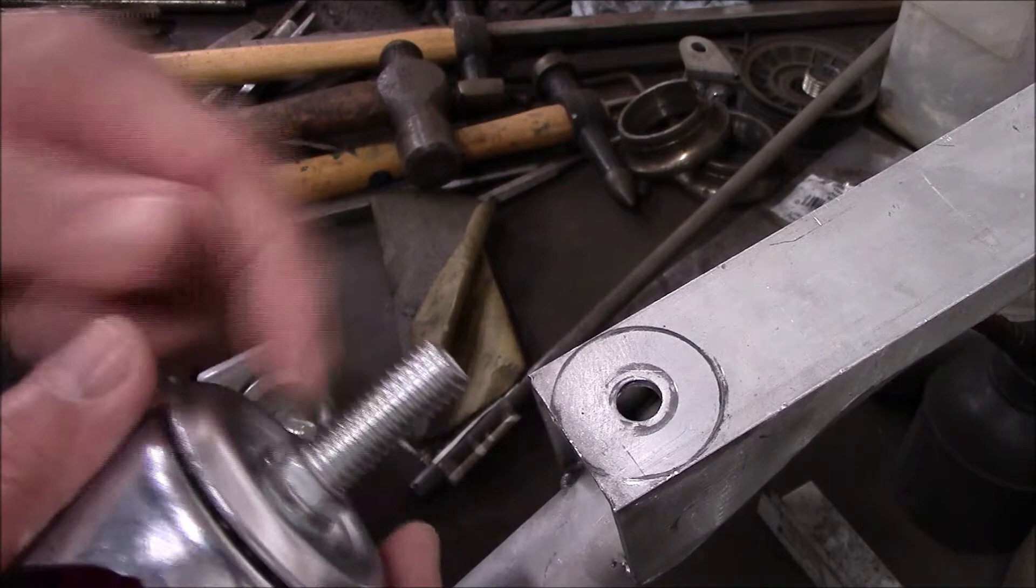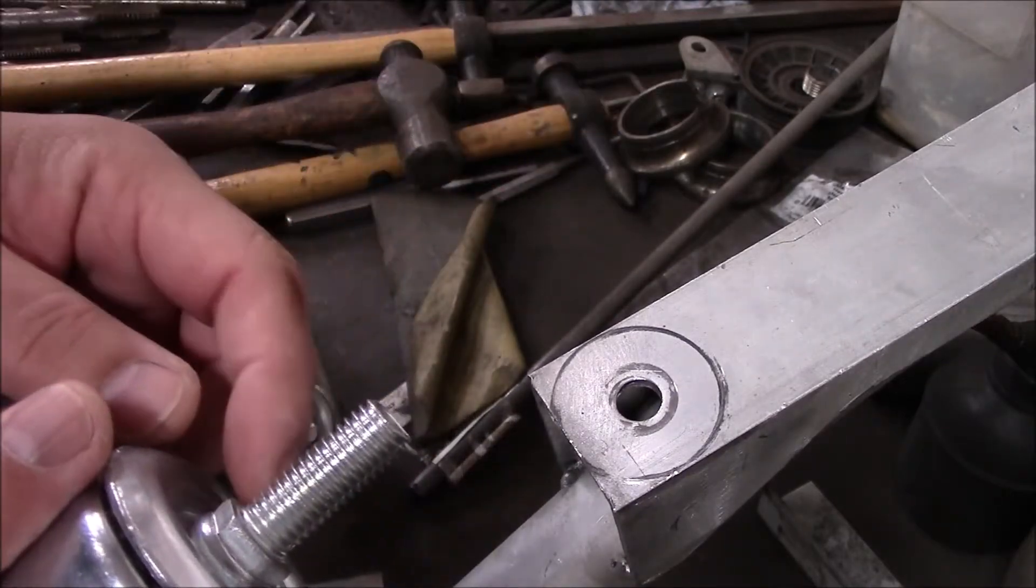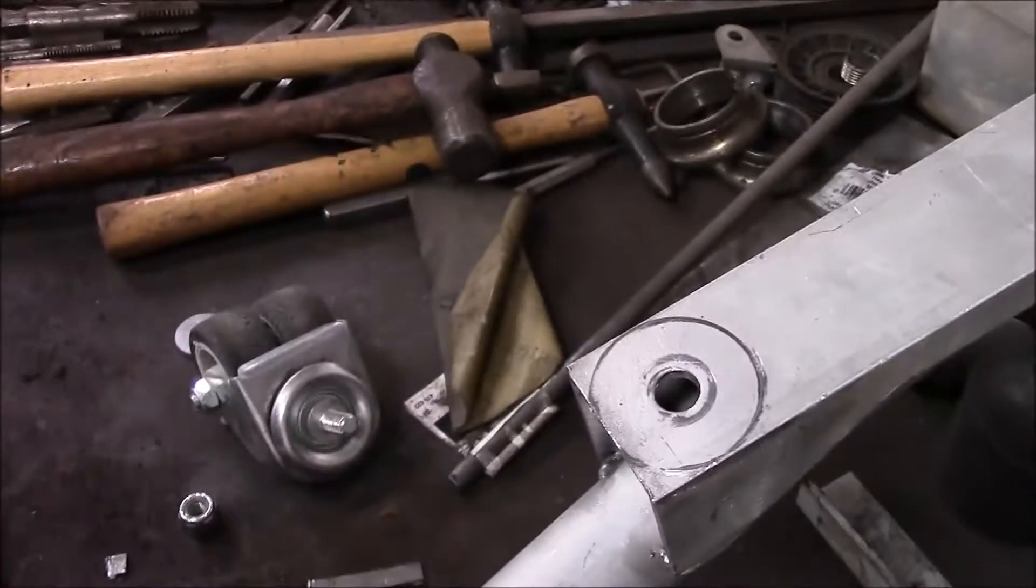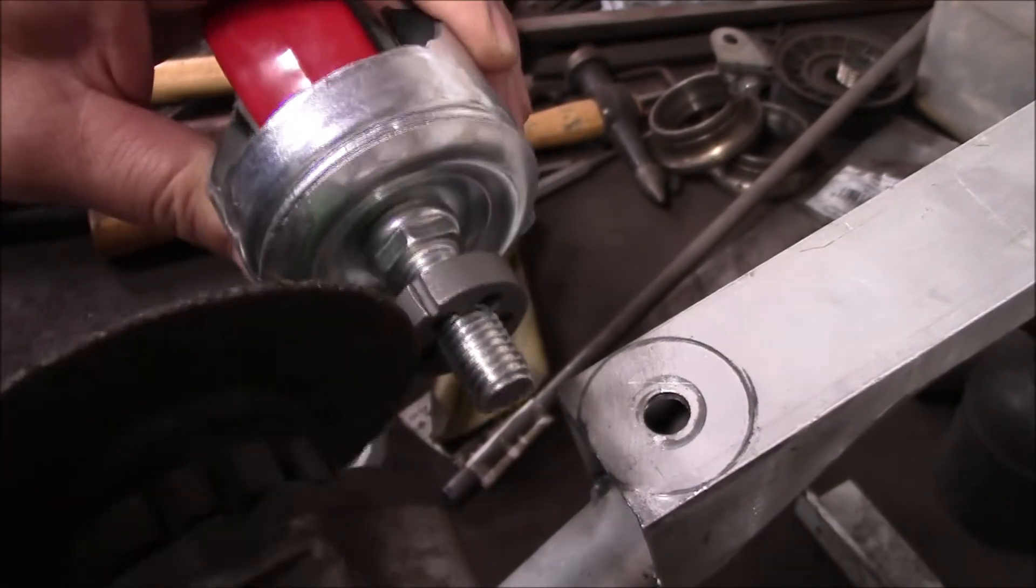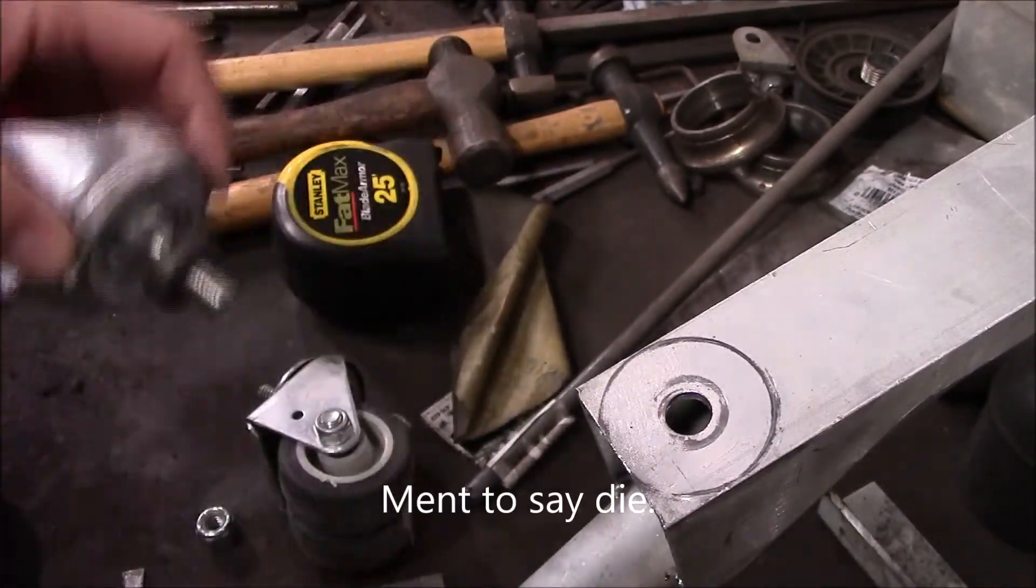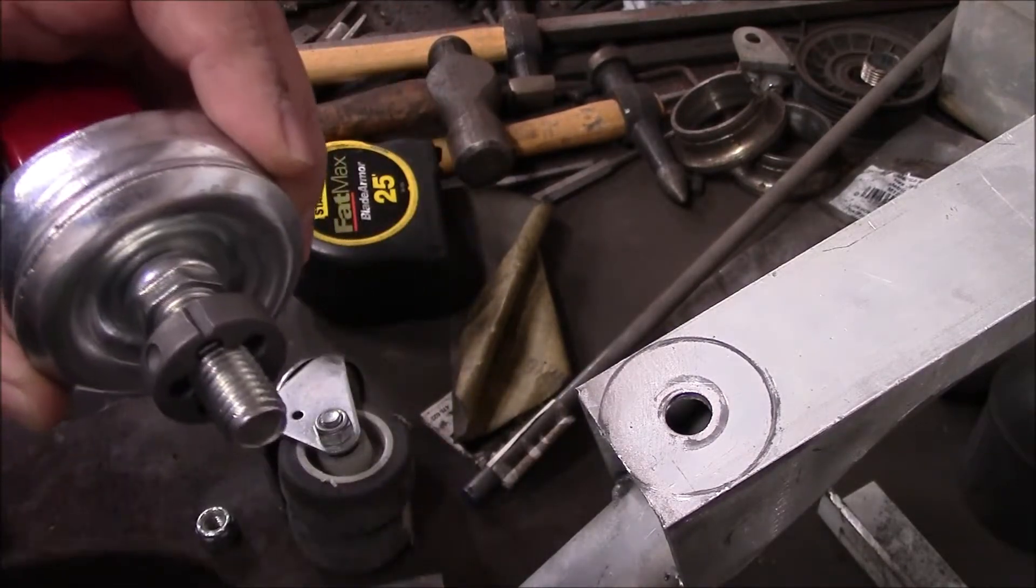Before I cut this I'm going to put a bolt on here so I can back it out and chase the thread so that won't be an issue. I'm going to cut it off and put a die on it. It's metric threading. The other one is about three quarters of an inch, so I'm going to measure and cut it to that length.